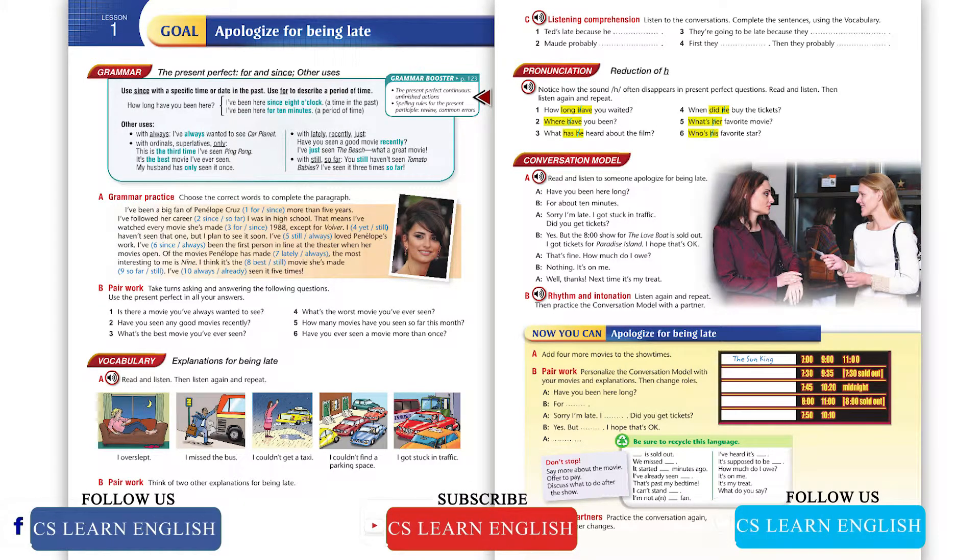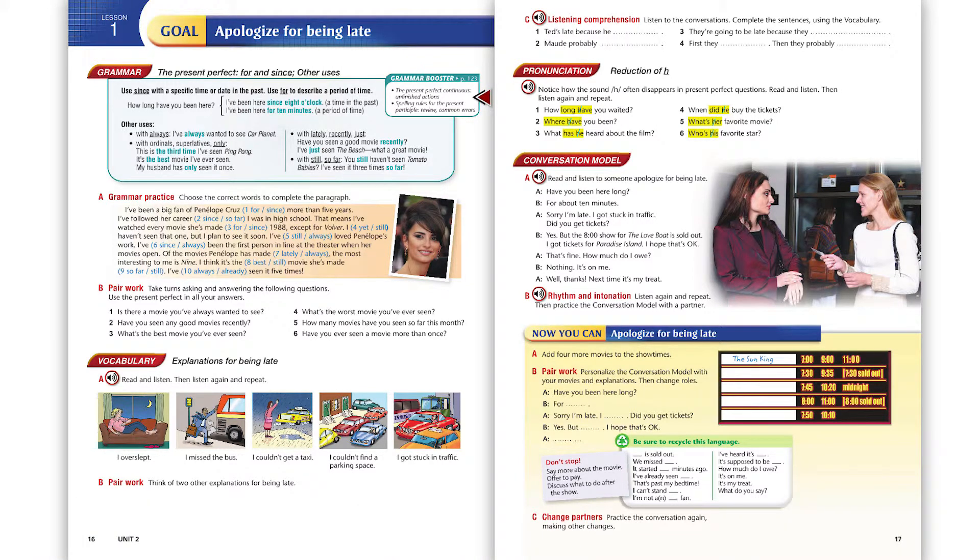Exercise A. Read and listen. I overslept. I missed the bus. I couldn't get a taxi. I couldn't find a parking space. I got stuck in traffic.